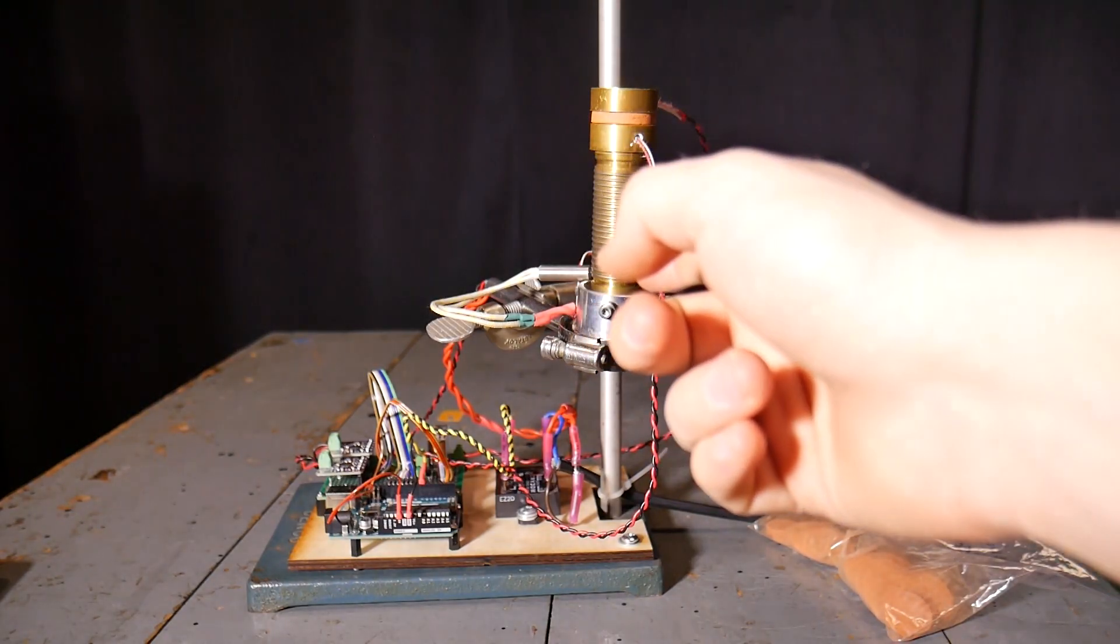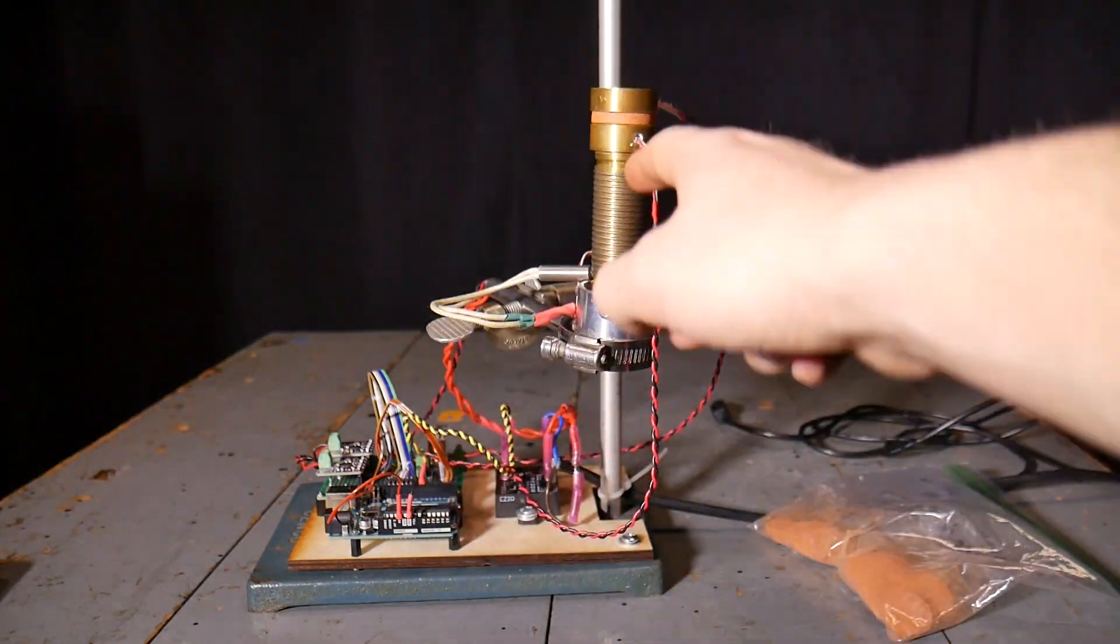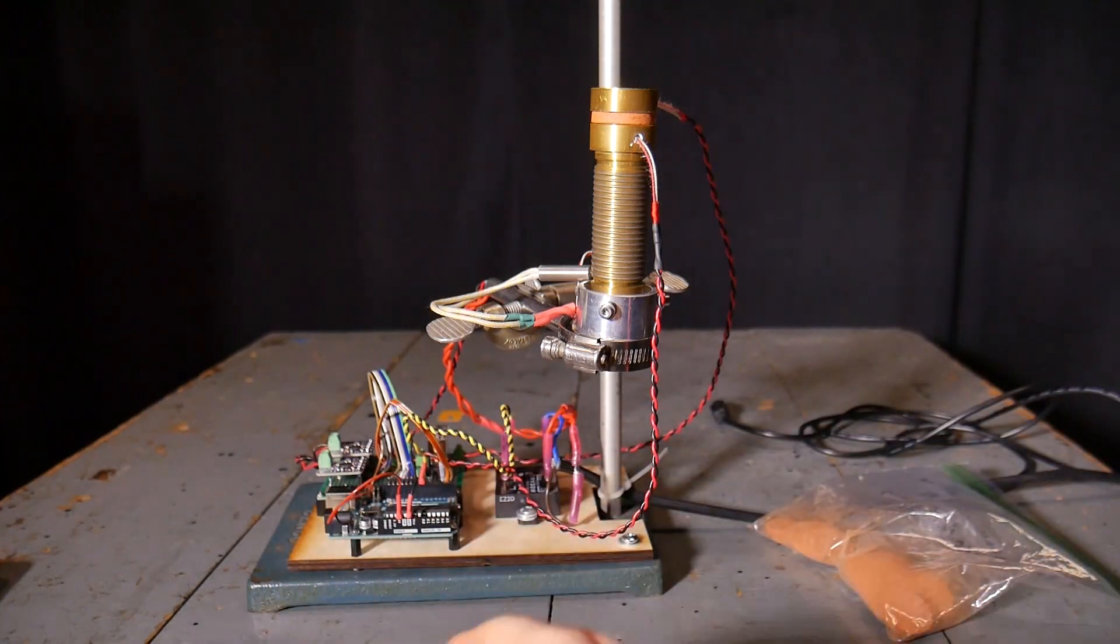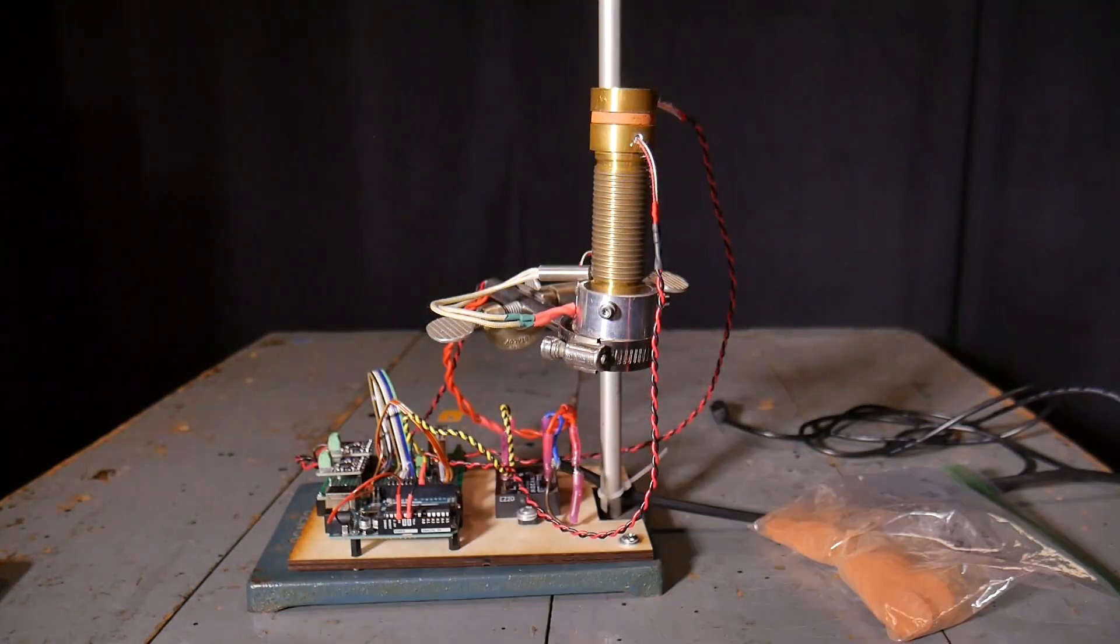This is my Lee's disk device. It can be divided into two parts. We have the measurement unit up here and the electronics down here. Everything is mounted on this lab stand that I found in the trash.